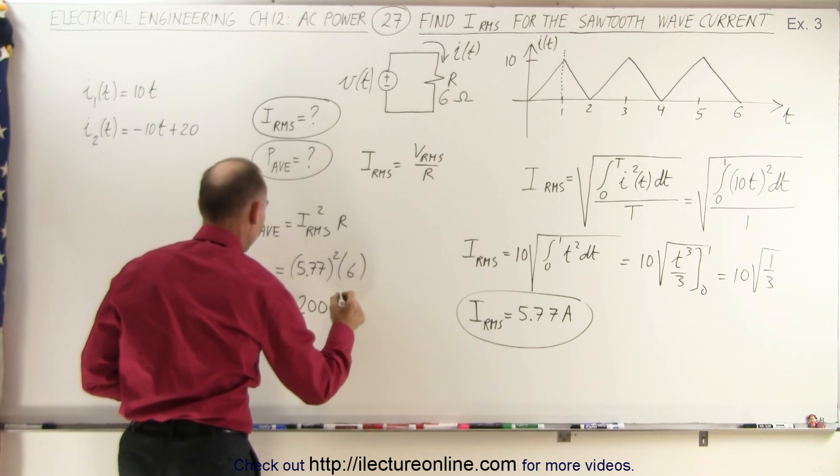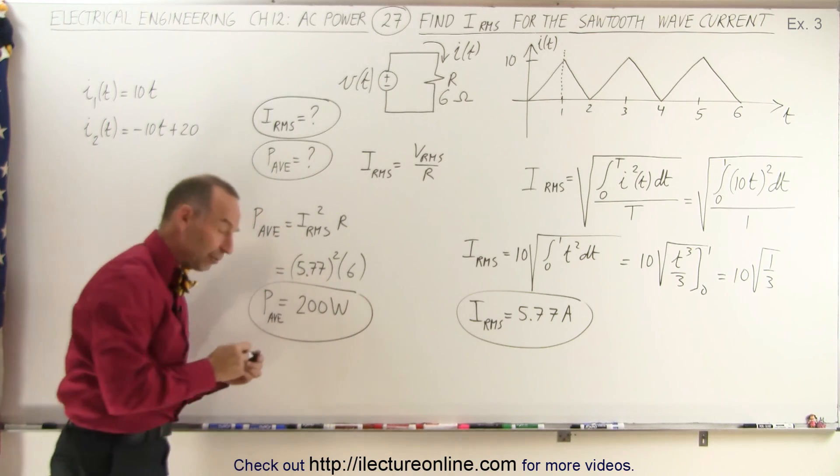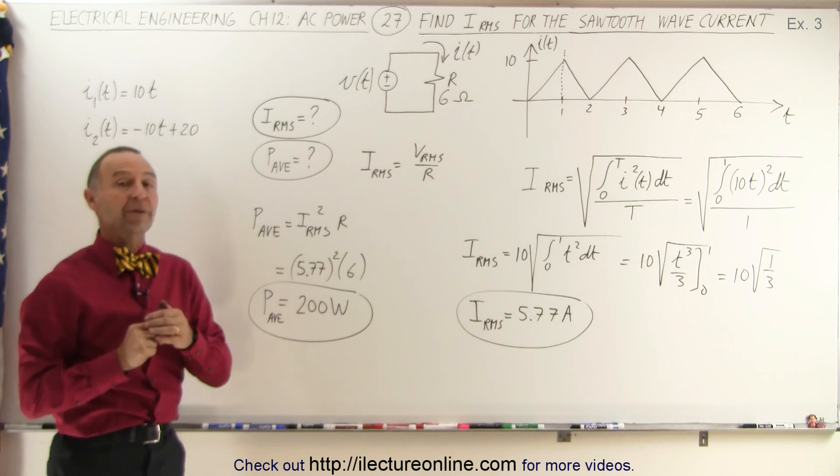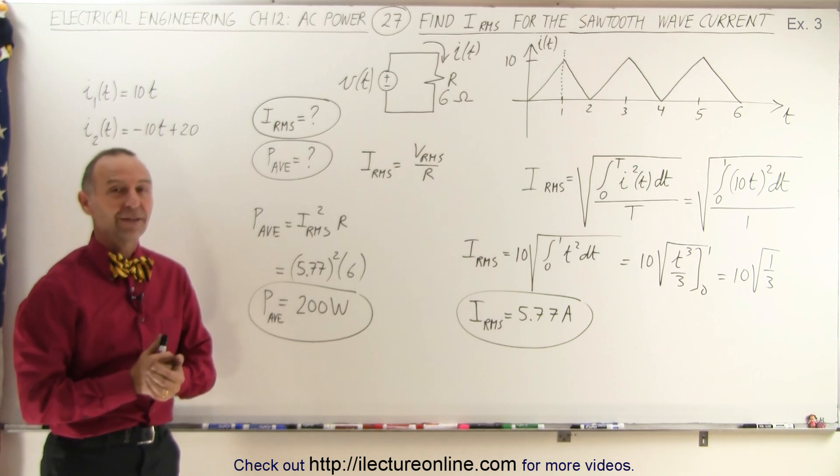So the average power delivered—not instantaneous power, but average power—to the resistor is 200 watts, with an RMS current of 5.77 amps. And that's how that's done.